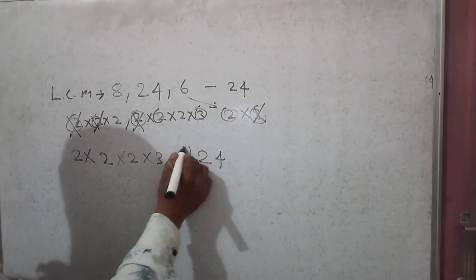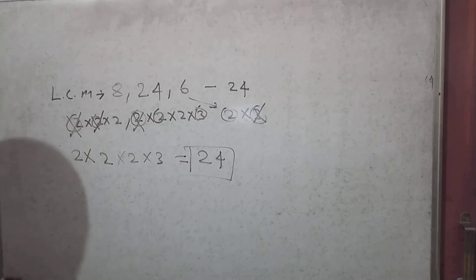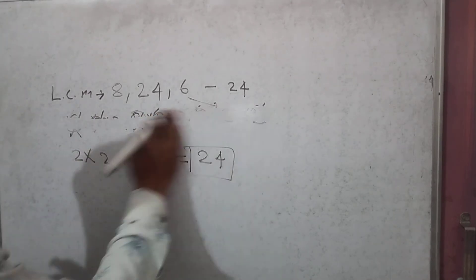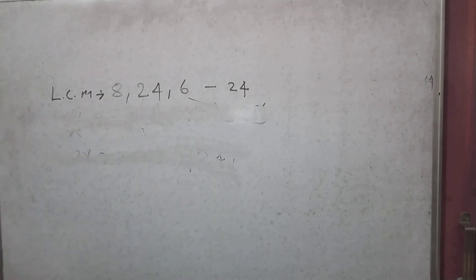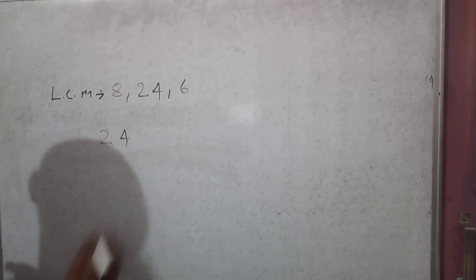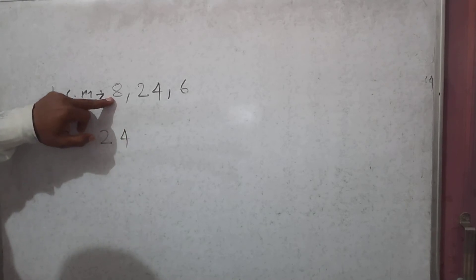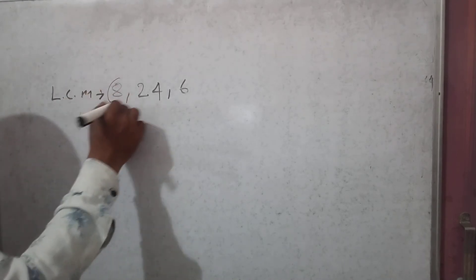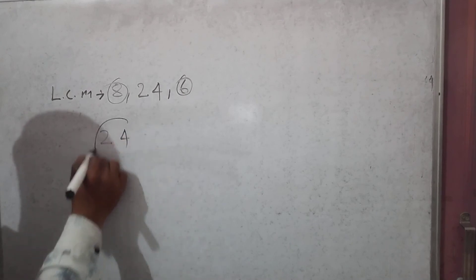Friends, we can pick the biggest number. What is the biggest number? The biggest number is 24. Is 24 divisible by 8? Yes, it is divisible by 8. Neglect this. Is 24 divisible by 6? Yes, it is divisible by 6. Neglect this. So our answer is 24. LCM of this number is 24.